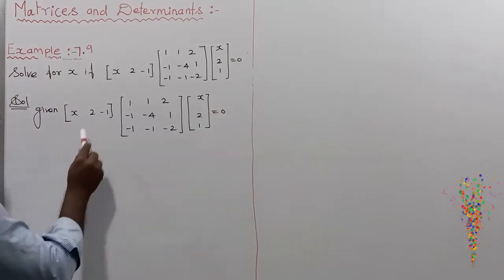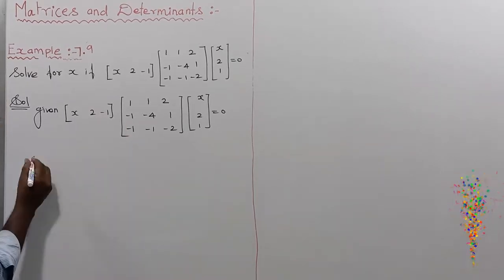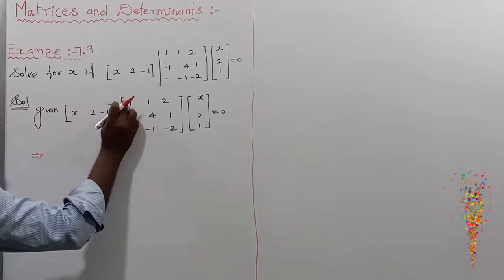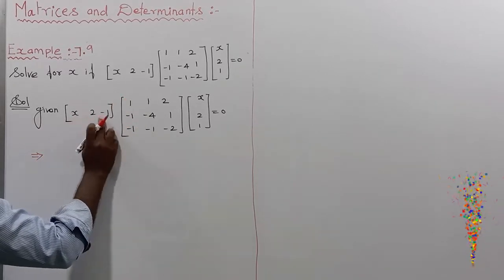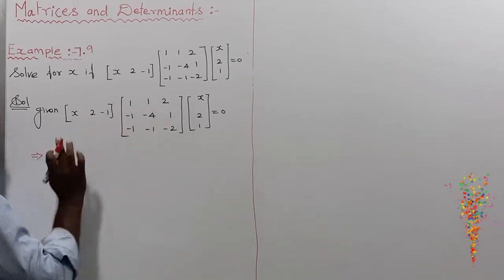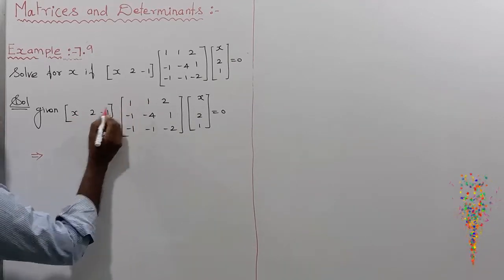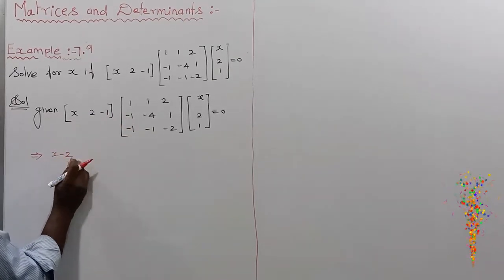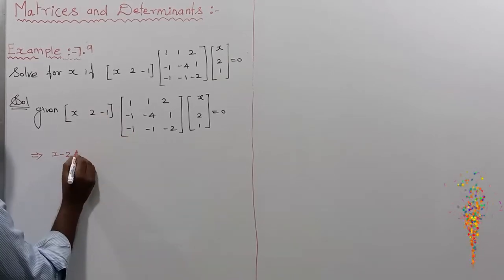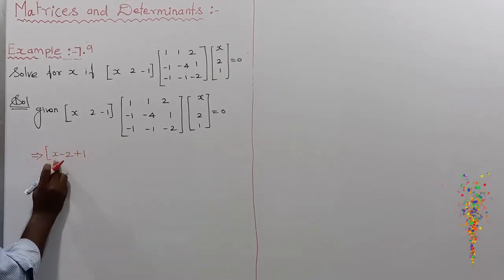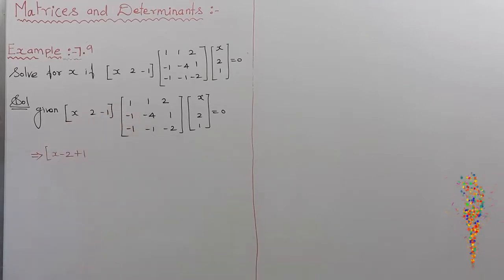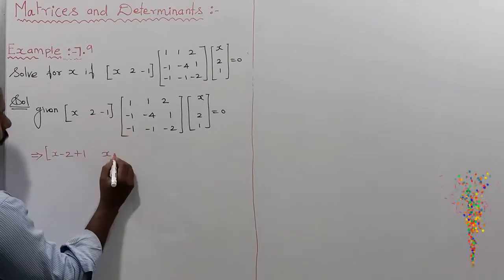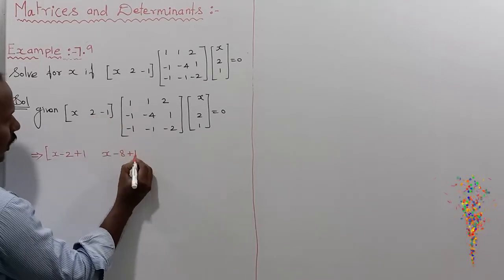First, take the multiplication of the first two matrices. First row, first column: x × 1 = x. Next, 2 × (-2) = -2. Next, (-1) × (-1) = +1. So the first entry is x - 2 + 1, giving x - 1. First row, second column: x + (-8) + 1, giving x minus 7.